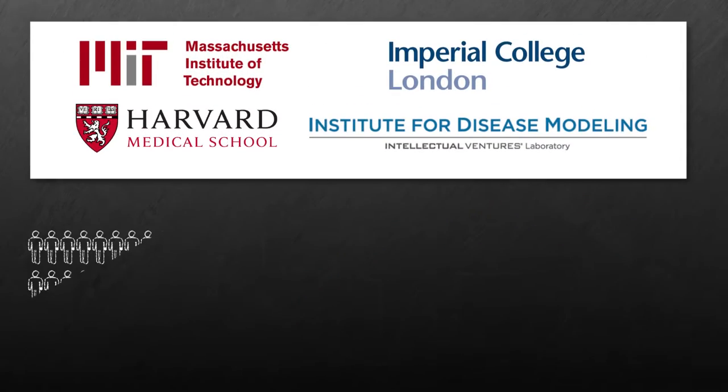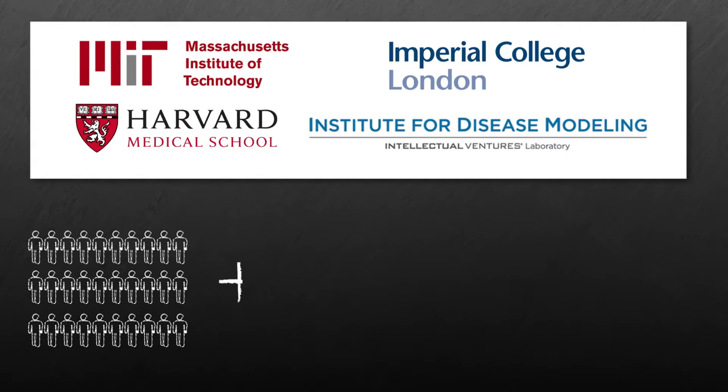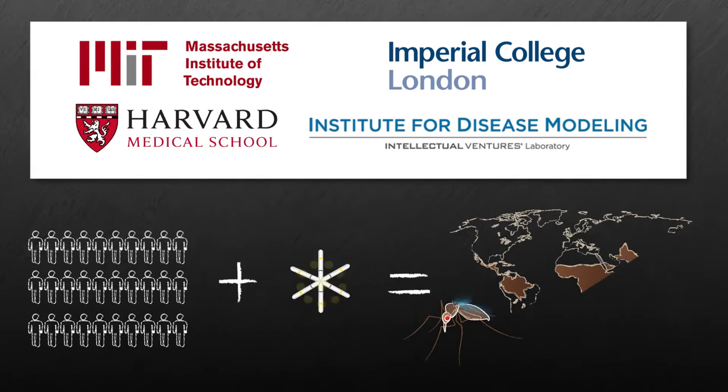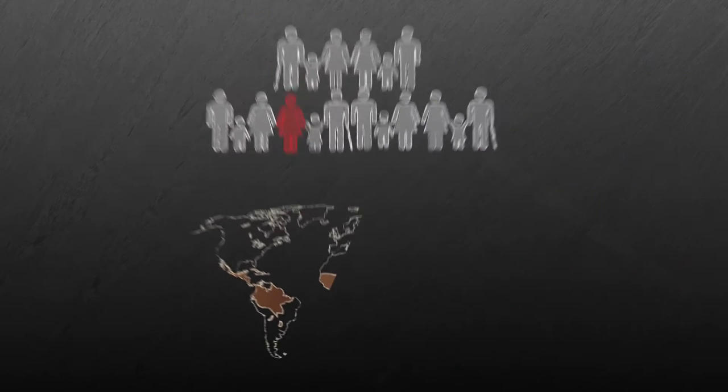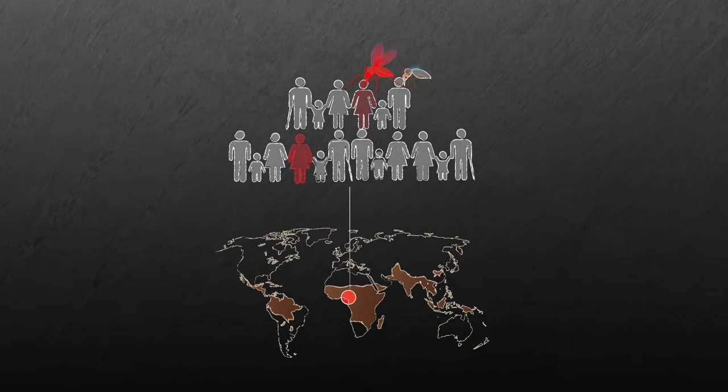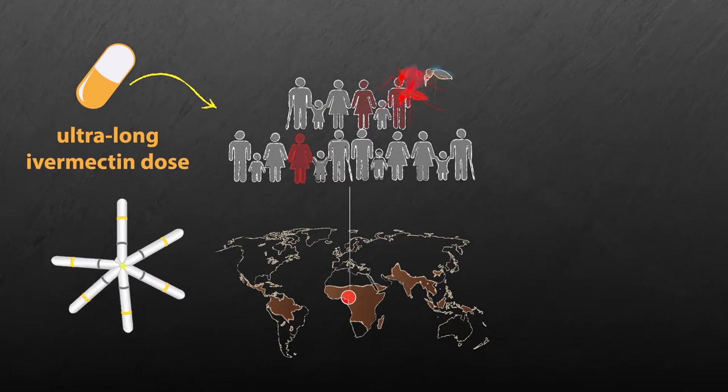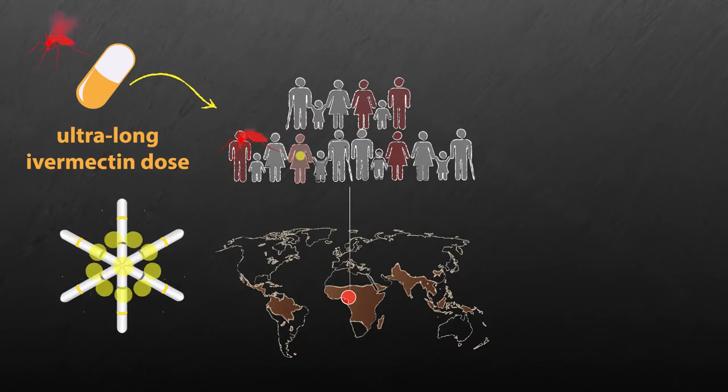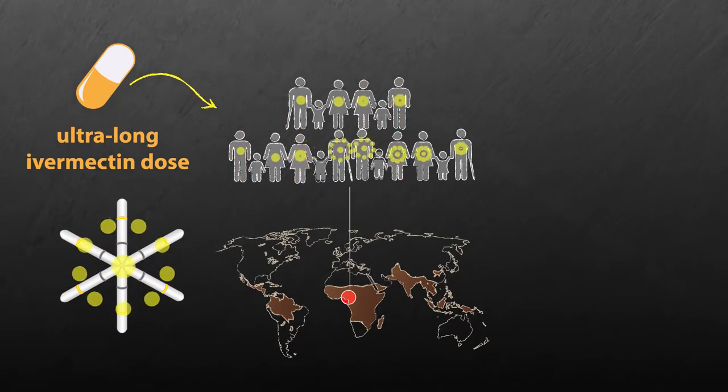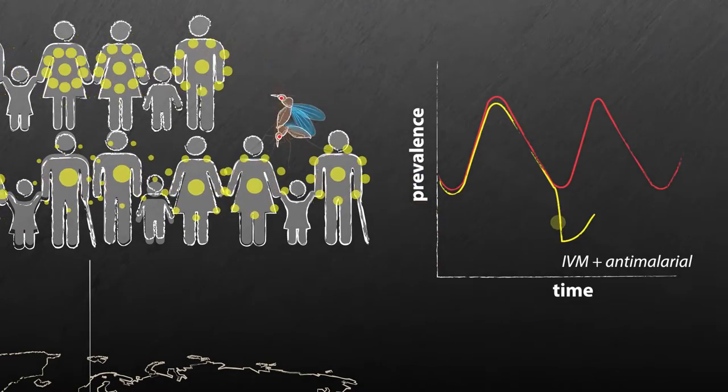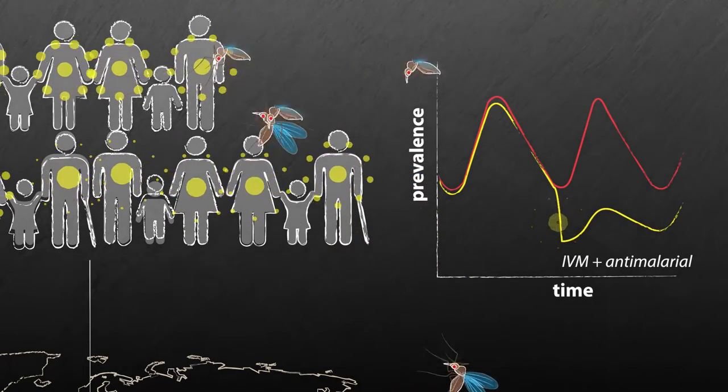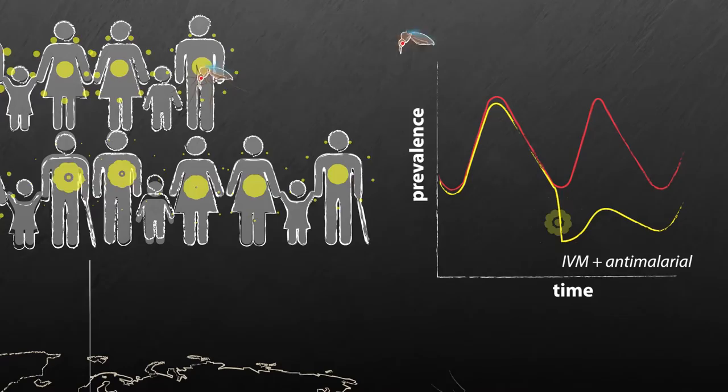We collaborated with experts from Imperial College in London and the Institute for Disease Modeling in Seattle to evaluate the potential to eliminate the malaria parasite in real-world settings. Using simulations informed by real-world data, we demonstrated that when the ultra-long ivermectin dosing system was introduced into villages and populations where malaria is highly endemic, it had the capacity to significantly reduce malaria burden when used in combination with an anti-malarial by shortening the lifespan of the mosquitoes.